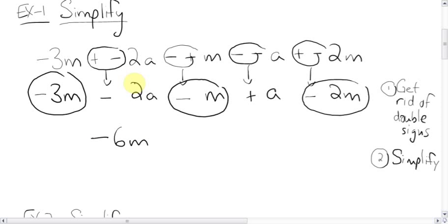The A's, let's put a rectangle around them. Minus 2 plus, remember this is a 1, negative 2 plus 1 is negative 1A. You don't have to put the 1 in, you can just call it negative A. Can't simplify that any further, that is our answer.